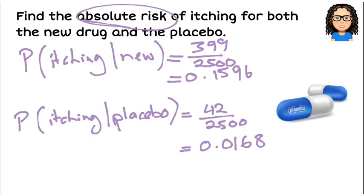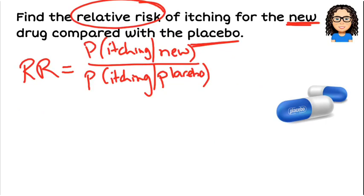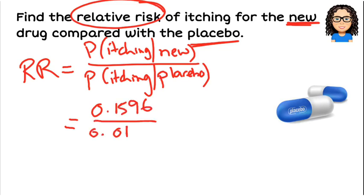The absolute risk of itching for the new drug is 0.1596 and for the placebo it is 0.0168. So we calculate 0.1596 divided by 0.0168, which gives us a value of 9.5.